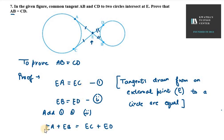You can see that on the left hand side you have EA plus EB, which is equal to AB. EC plus ED is equal to your total CD. So hence proved for question number seven.